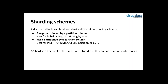The two most common schemes used in distributed databases are range partitioning by a partition column — where a range of values will be in a shard, which is very good for bulk loading a lot of data at the same time, typically partitioning by timestamp — and hash partitioning by a partition column, which is best for real-time inserts, updates, and deletes rather than bulk loading, typically partitioning by some identifier. A shard is basically a partition of the data stored together on one machine, or on multiple machines if there's replication, and each worker has shard placements which are tables on the worker nodes.